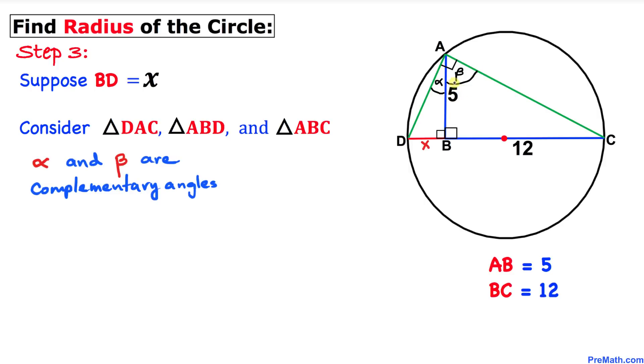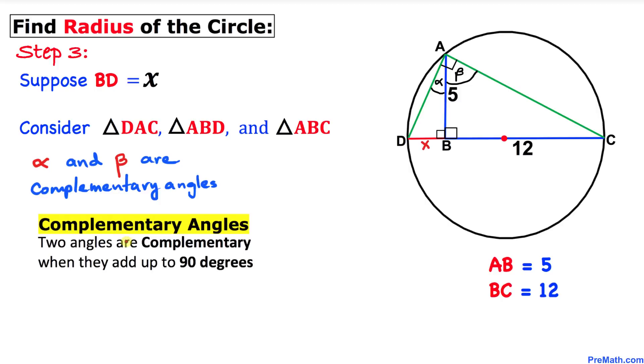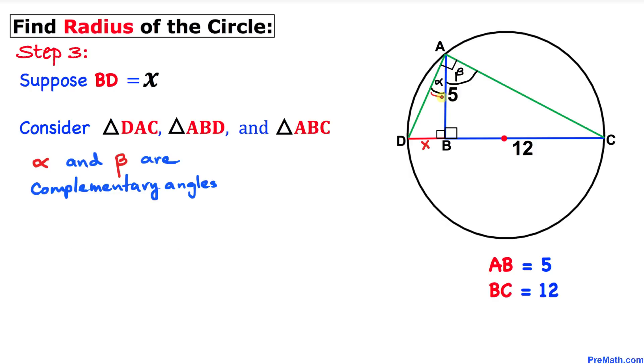These two angles alpha and beta are called complementary angles. Here's the definition: two angles are complementary if they add up to 90 degrees. We can see that alpha and beta add up to 90 degrees. Now we know this angle is alpha, this is 90 degrees, so this angle has to be beta as well.